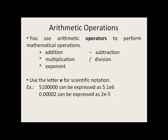If you have very large numbers or very small numbers, you can use the letter e in scientific notation. For example, 5,100,000 can be expressed as 5.1e6. 0.00002 can be expressed as 2e-5.